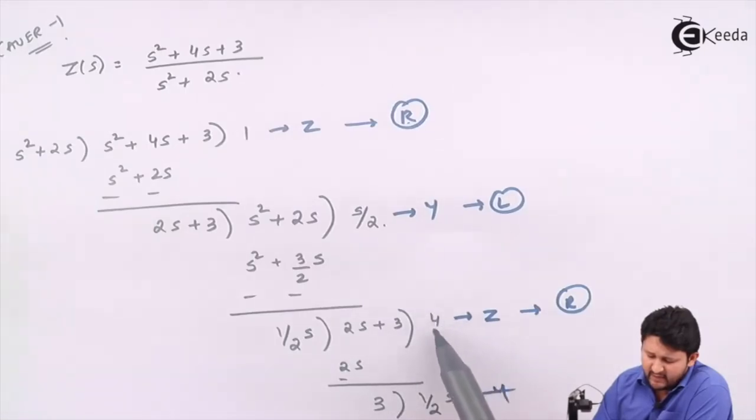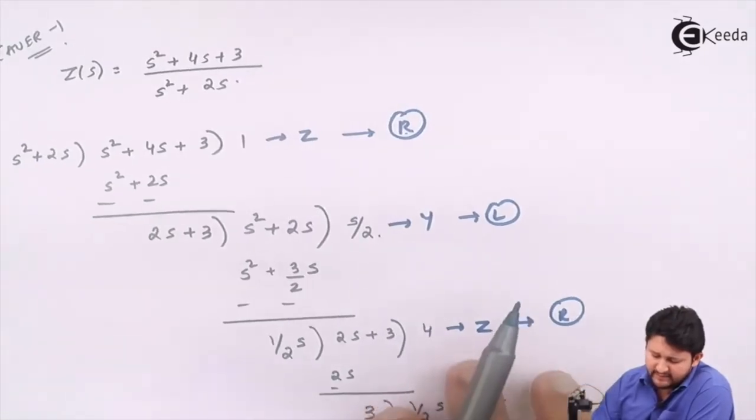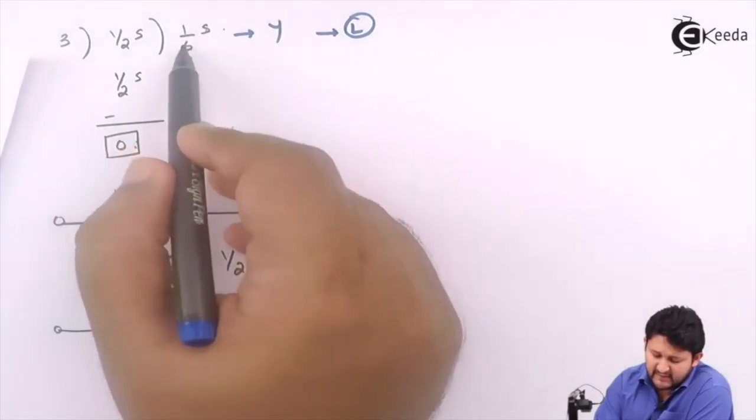For R, you won't be getting any S, so you have the value for R is 4 ohms. And for L, it will be the adjacent value, that is 1 upon 6.